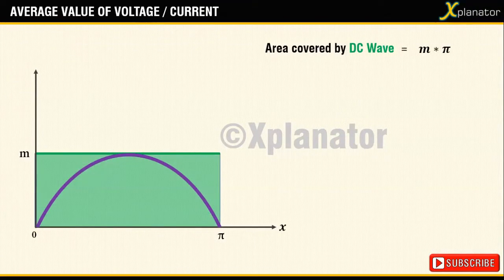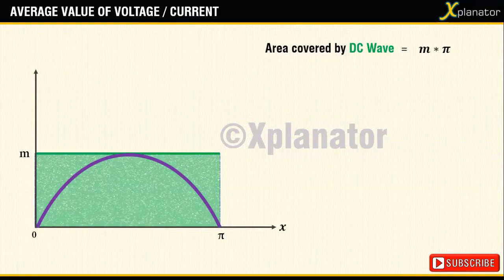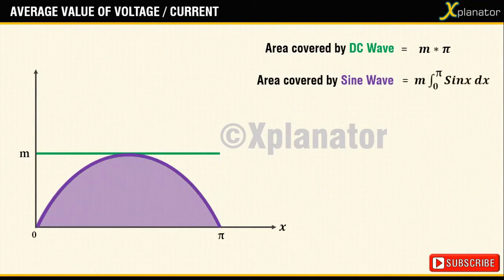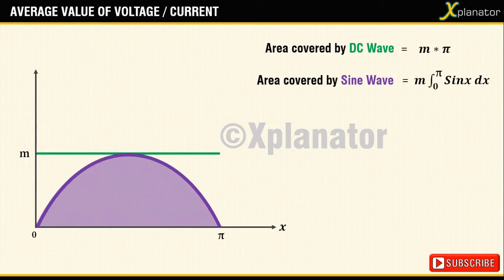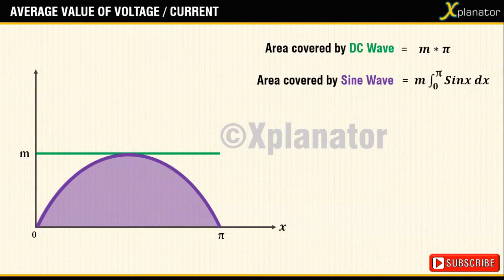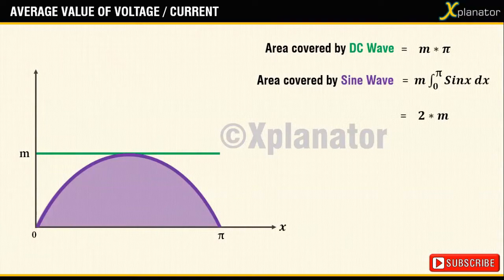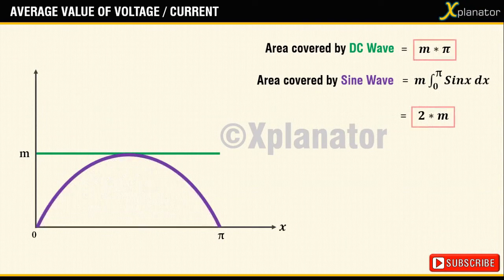To calculate the area under the AC signal integrate it from 0 to pi along with its magnitude. From the waveform you can easily see that AC is going to occupy lesser area than the DC. And if you calculate the answer to the integral it is going to be 2 x M which is definitely lesser than the area under the DC wave.